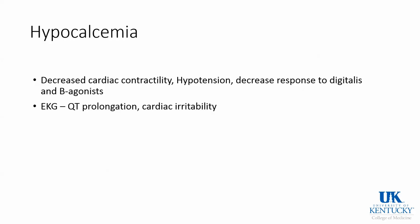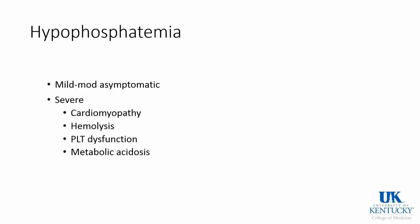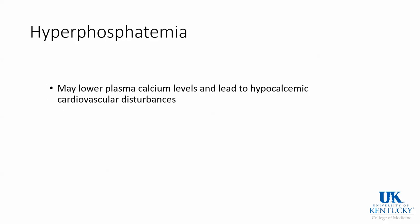Low calcium causes decreased contractility, hypotension, and classically QT prolongation with cardiac irritability on EKG. Hypercalcemia causes hypertension, a short QT interval, short ST segment, and increased cardiac sensitivity to digitalis. Low phosphate is mild to moderately asymptomatic, but severe hypophosphatemia causes cardiomyopathy, hemolysis, platelet dysfunction, and metabolic acidosis. Too much phosphate may lower plasma calcium levels, producing the same changes as hypocalcemia.